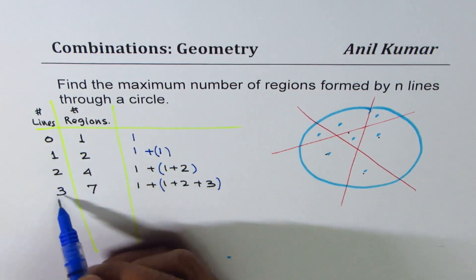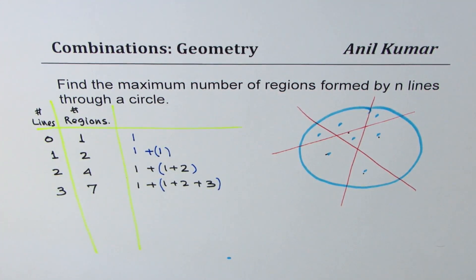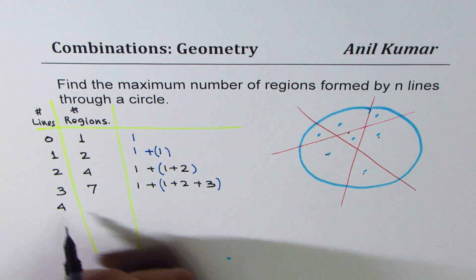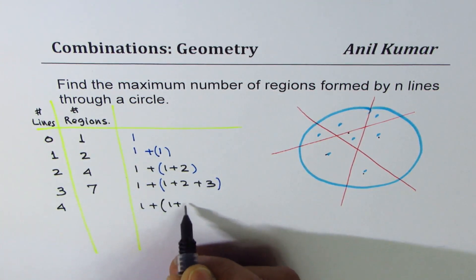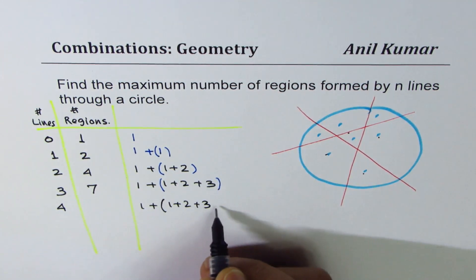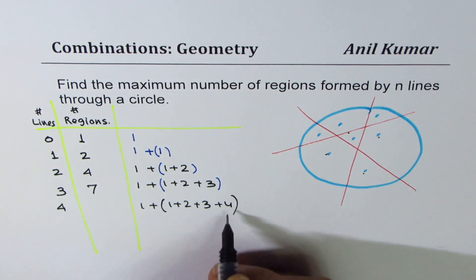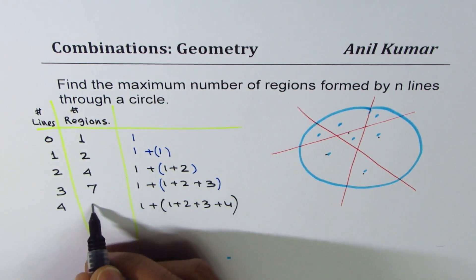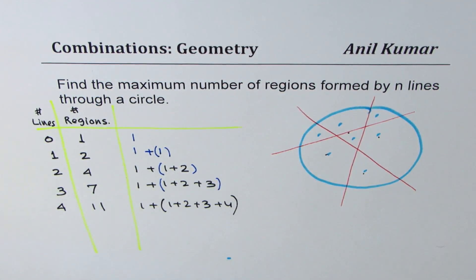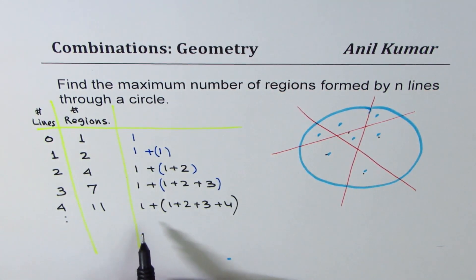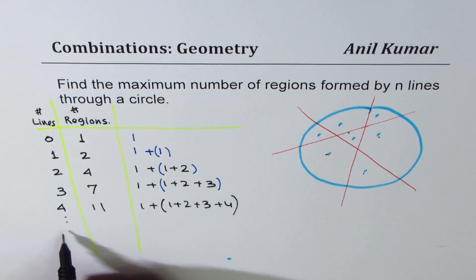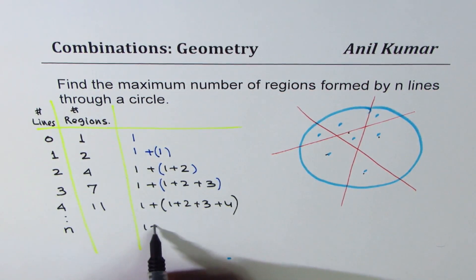If you observe, this pattern is a combination of the number of lines being drawn. If I draw the fourth line, then what I expect is: one plus we already have one plus two plus three, and we expect four more regions to be created — seven plus four equals eleven in all. That is how we can grow the number of regions by increasing the number of lines.